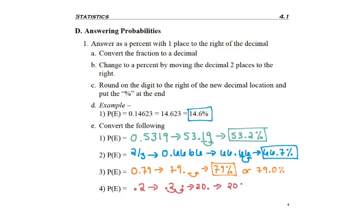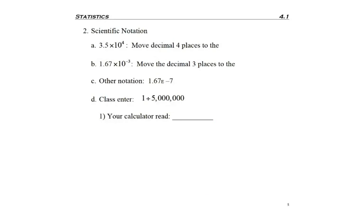Lastly, in terms of writing probabilities, sometimes as you go to calculate it, you'll find that your calculator gives you scientific notation. So I just want to make sure everybody remembers how to read scientific notation. In this first problem where I have 3.5 times 10 to the fourth, hopefully you remember that means to move your decimal four places to the right.